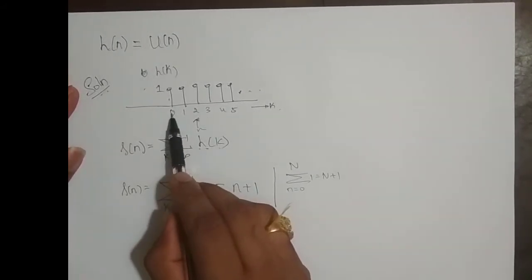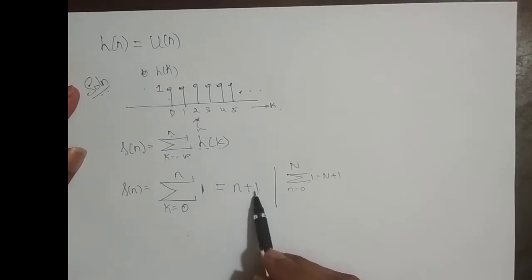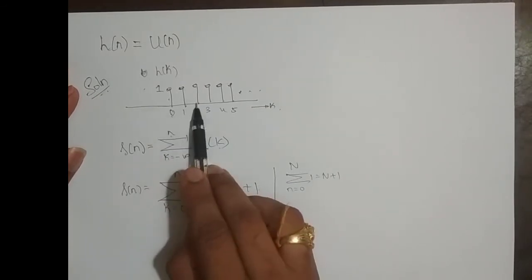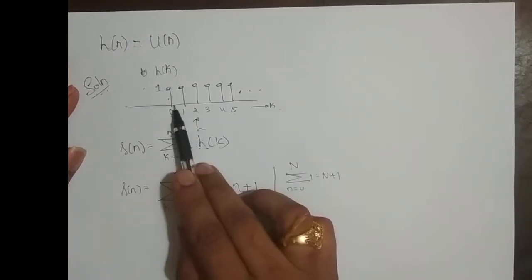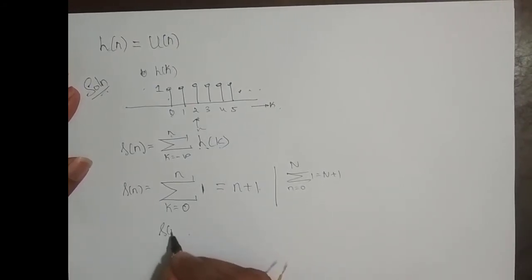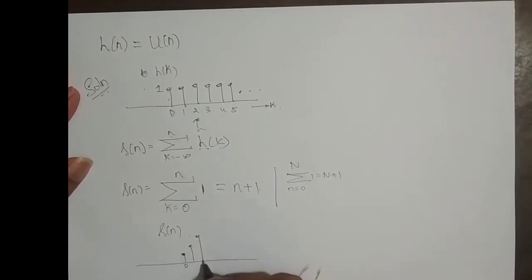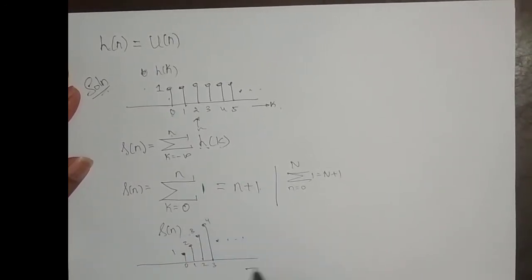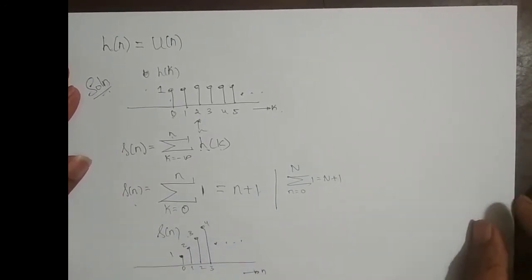We can cross-check: at n equal to 0, the sample is 0 plus 1 equals 1. At n equal to 1, it is 1 plus 1 equals 2. At n equal to 2, it is 2 plus 1 equals 3. If n is at 5, 5 plus 1 is 6, so all 6 samples are added: 1, 2, 3, 4, 5, 6. So if I try to sketch this step response, at n equal to 0 it is 1, then 2, 3, 4, and it goes on. Once you get S of n, you can sketch it.